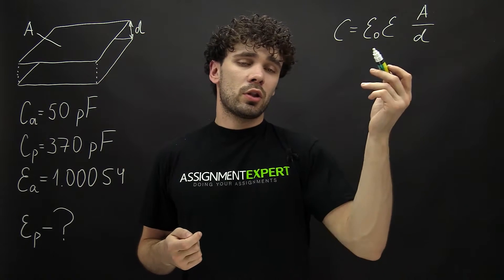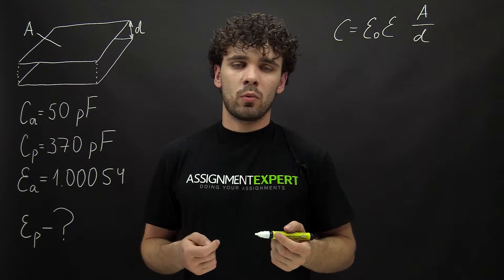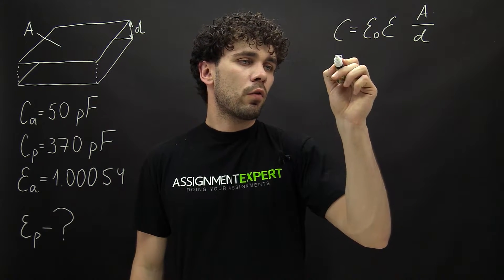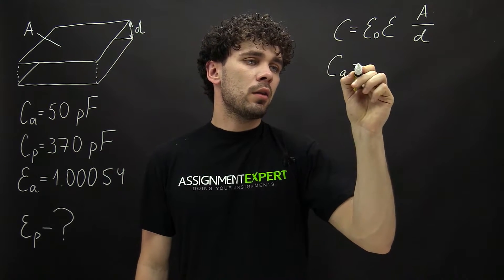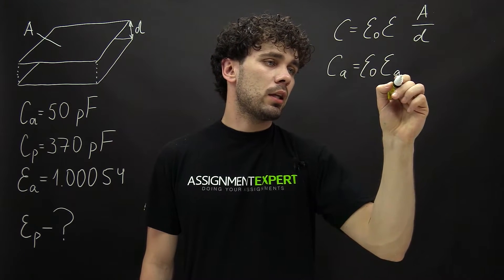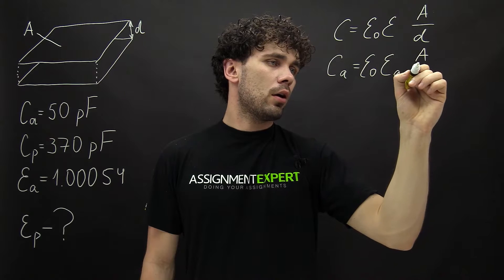So let's use this formula for our two cases, when there is air and when there is plastic between the plates. For air, we have C_A equals ε0 times ε_A times A over D.